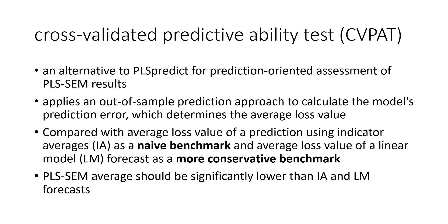Another criterion recently developed as an alternative to PLS Predict is the cross-validated predictive ability test, CVPAT. It applies an out-of-sample prediction approach to calculate the model's prediction error, determining the average loss value. These average loss values for PLS are compared with the indicator average (naive benchmark) and the linear model forecast (more conservative benchmark). The criteria is that PLS-SEM average loss should be significantly lower than both the indicator averages and the LM forecast.